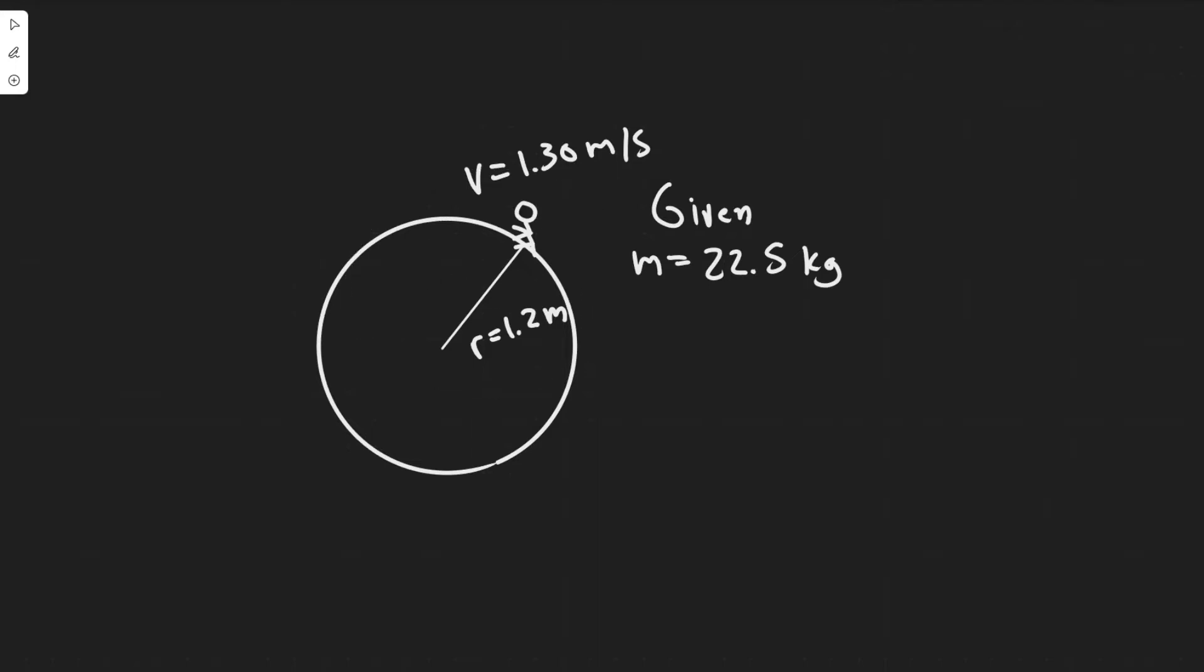So basically we have this child going around this merry-go-round. We're given the radius, their velocity, and their mass.